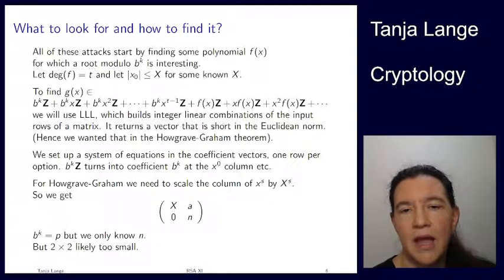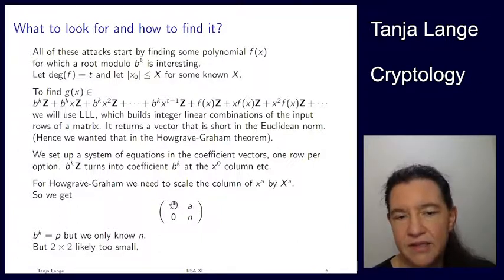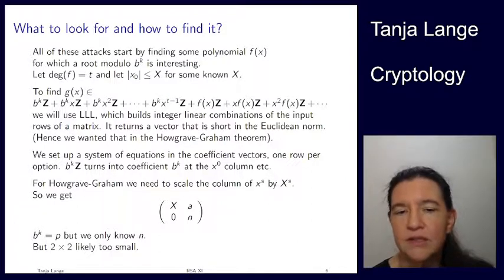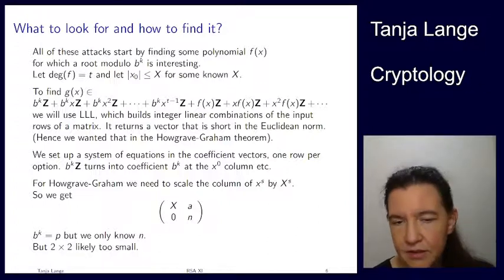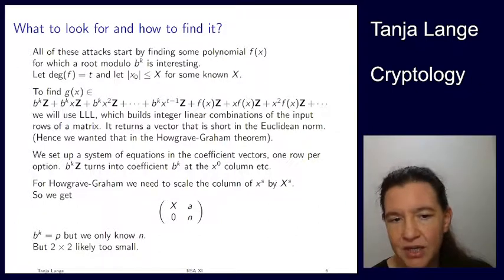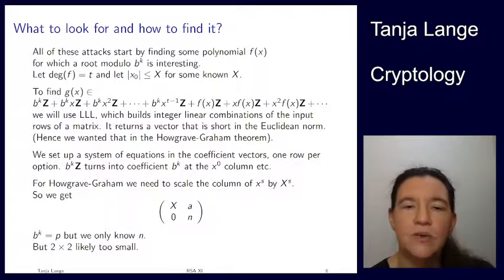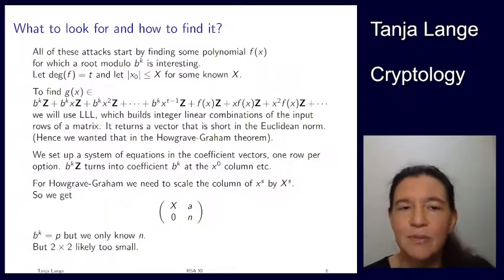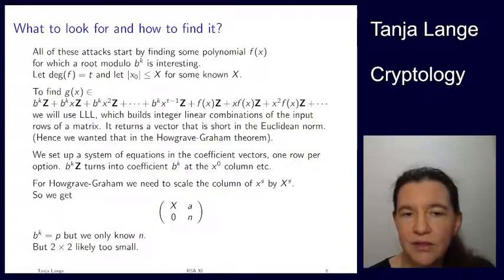A 2×2 matrix is too small — you would need to know most of the bits of p to have any success there, so we use a 3×3 matrix, which is also what we saw in the examples. For the 3×3 case, instead of b^k = p we use n, and we can also use multiples of n.